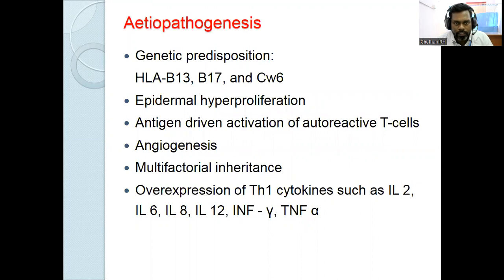Etiopathogenesis: there is a strong genetic predisposition with psoriasis. HLA associations include HLA-CW0602, HLA-B13, and HLA-B17. It causes epidermal hyperproliferation leading to antigen-driven activation of autoinflammatory T cells, leading to angiogenesis. There is also multifactorial inheritance.